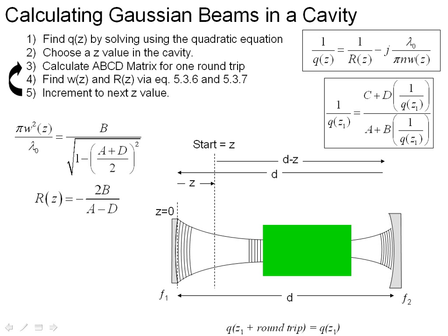So how does this work? Well, as I hinted at before, you find an expression for Q of Z by solving the quadratic equation. This is pretty straightforward. The book's already done it, and we have terms for W of Z and R of Z in terms of the ABCD matrix at any point Z within the cavity.